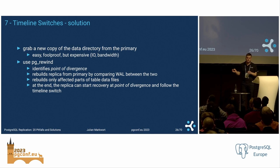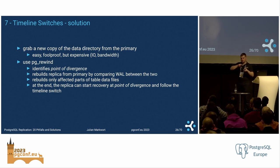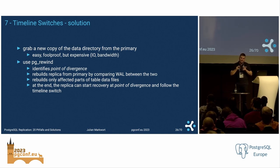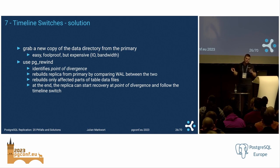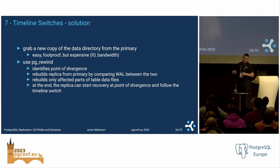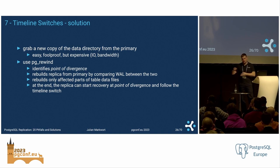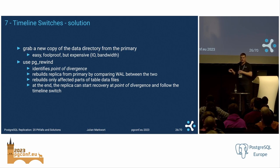An alternative is pg_rewind, which identifies the point of divergence by examining the WAL on both instances, analyzes the transaction log for all blocks written on both since divergence, and copies all blocks that might be different on the replica compared to the primary. Once pg_rewind has reconstructed all the blocks, you can start recovery of the replica at this point of divergence and tell it to follow the switch to the new timeline.